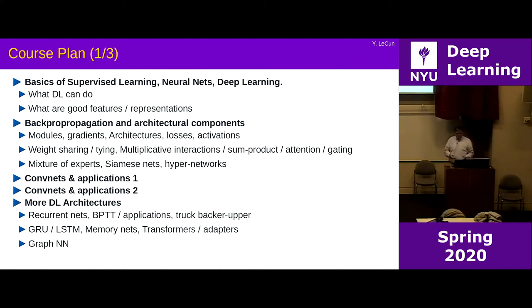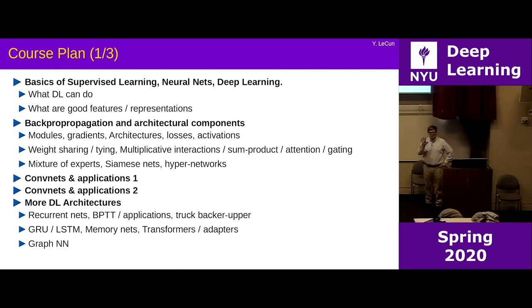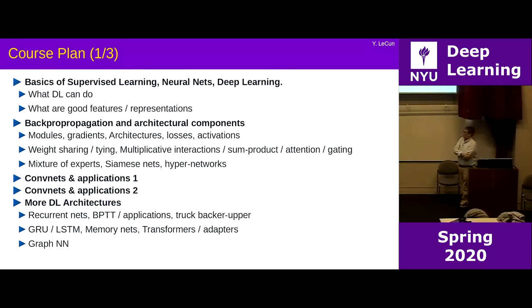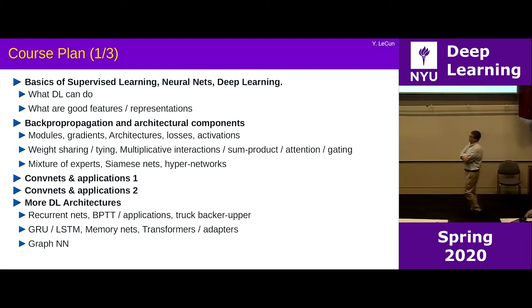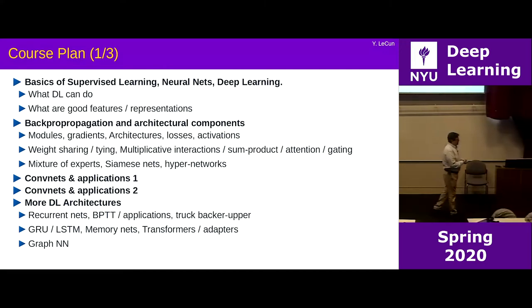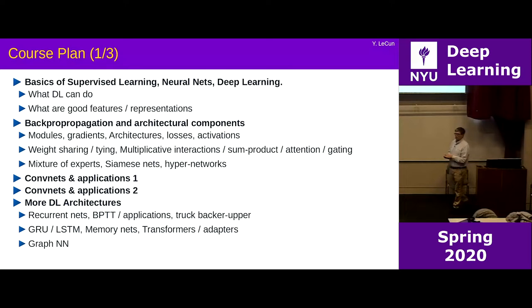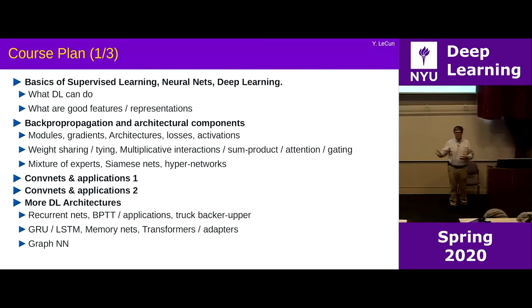Particular macro architectures like mixture of experts, Siamese nets, hypernetworks, etc. Then there will be either one or two lectures about convolutional nets and their applications — one of them might end up being a guest lecture. Then, more specifically about deep learning architectures useful in special cases: things like recurrent neural nets with backpropagation through time, which is the way you train recurrent neural nets, and applications to things like control and predicting time series.